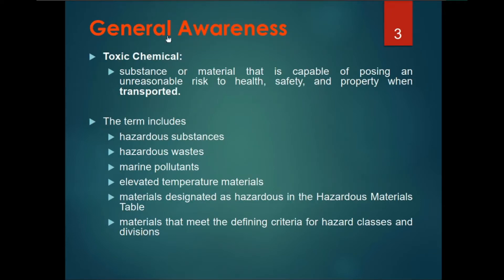General awareness: what is a toxic chemical substance? A material that is capable of posing unreasonable risks to health, safety and property when transported. The term includes hazardous substance, hazardous waste, marine pollutant, elevated temperature materials, materials designated as hazards in hazardous materials tables, and materials that meet the defining criteria for hazard classes and divisions.